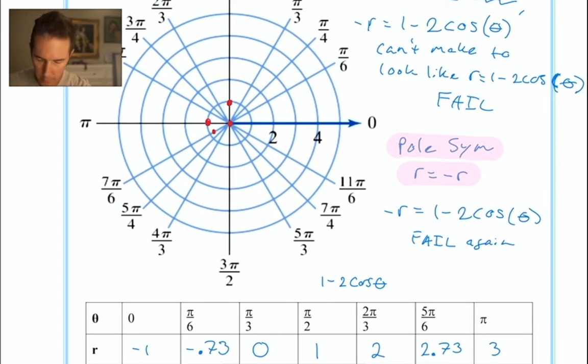At 5π/6, go out about 2.75. At π, go out 3 units. I've plotted all of these with solid dots.